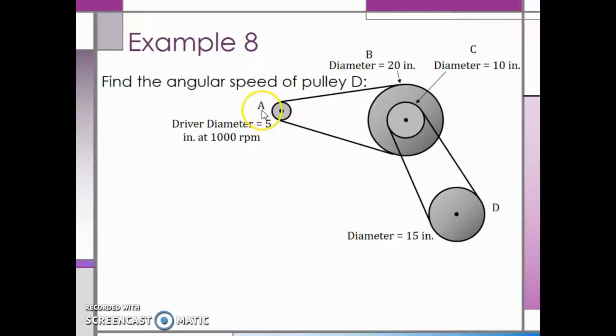We know that pulley A has a diameter of 5 inches and it is spinning at 1000 RPM. We have two other pulleys, pulley B with a diameter of 20 inches and pulley C with a diameter of 10 inches.